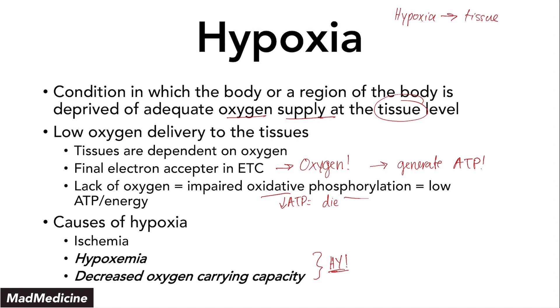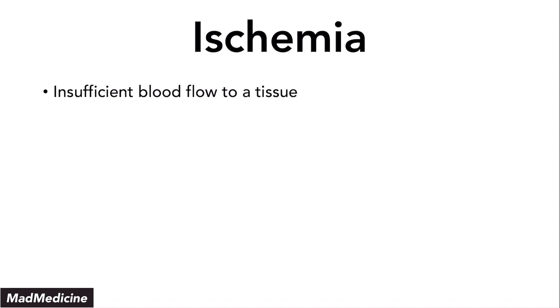Ischemia is what we're going to discuss to close this lecture. Ischemia occurs when you have insufficient blood flow to a tissue — it could be any tissue. If you are not supplying a tissue with an adequate amount of blood, you're going to kill that tissue, because it is in the blood that we are actually transporting oxygen. If you are not perfusing well enough, you will have ischemia because oxygen is not being delivered. There are three main mechanisms of ischemia.